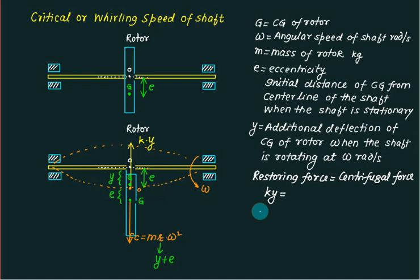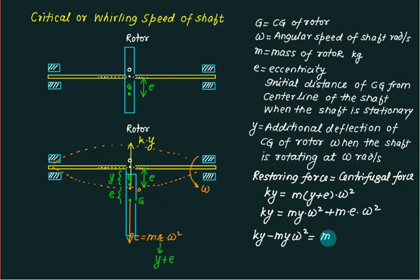The centrifugal force is M times the radial distance Y + E, multiplied by omega square. We can expand this: KY = m·Y·ω² + m·E·ω². Shifting this term, we get KY - m·Y·ω² = m·E·ω². Taking Y common: Y(K - m·ω²) = m·E·ω².